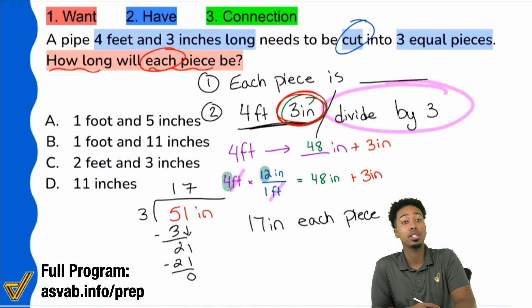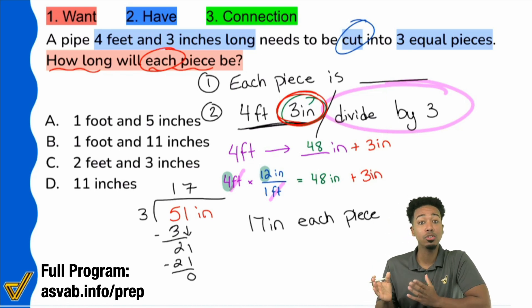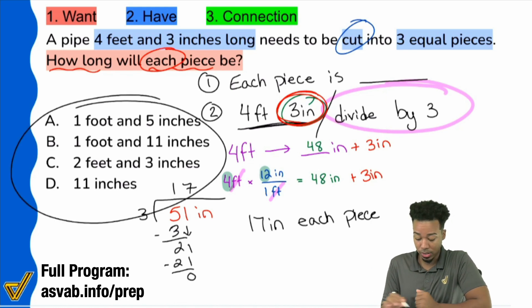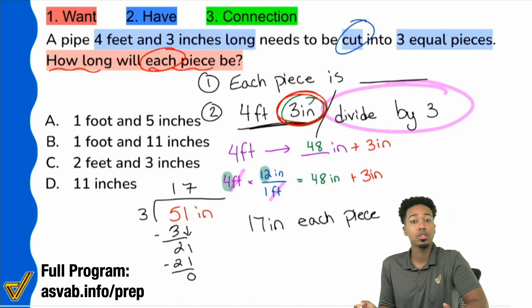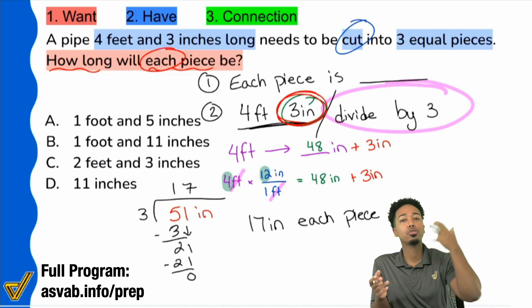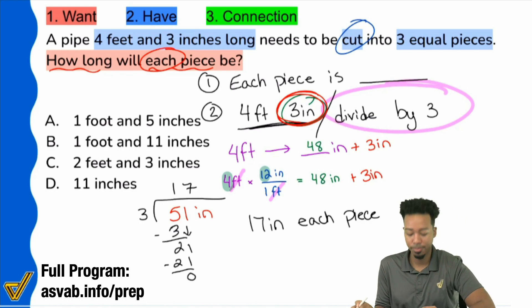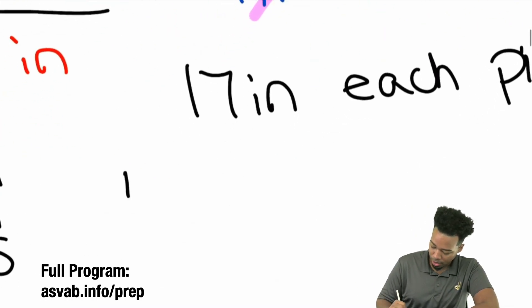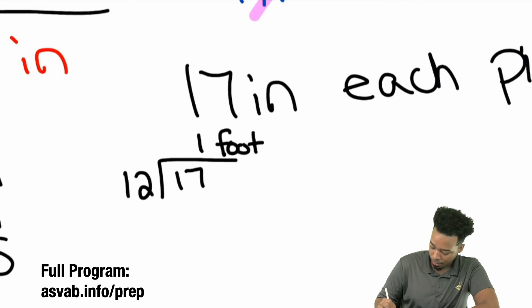Is there anything else that we need to do here? Absolutely. We need to go ahead now and take the 17 inches and notice that none of our answer choices actually say 17 inches. So we know that 17 inches is more than one foot. We got to convert that into feet and inches. How do we do that? We divide by 12 because you're going to see how many groups of 12 fit into 17. So I'm going to zoom in right over here and I'm going to divide 12 into 17 to convert it back.